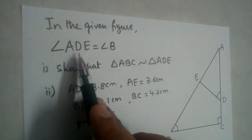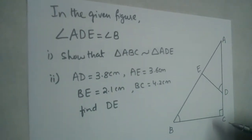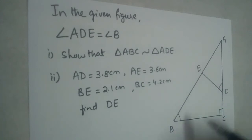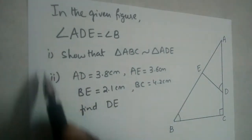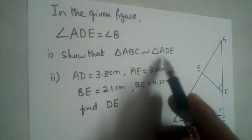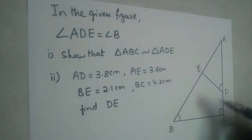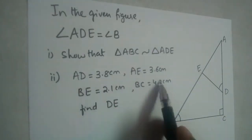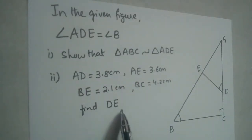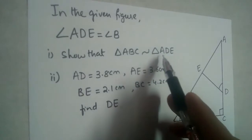In the given figure, angle ADE is equal to angle B. There are two bits to prove: first, show that triangle ABC is similar to triangle ADE — the bigger triangle is similar to triangle ADE. The second part is, sides are given and we need to find DE. So let us first prove that triangle ABC is similar to triangle ADE.